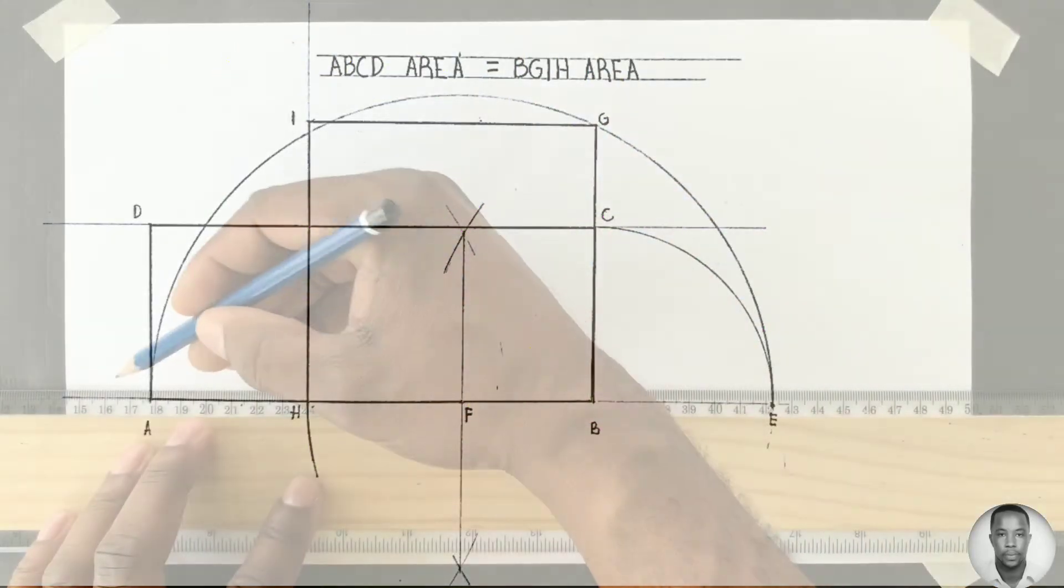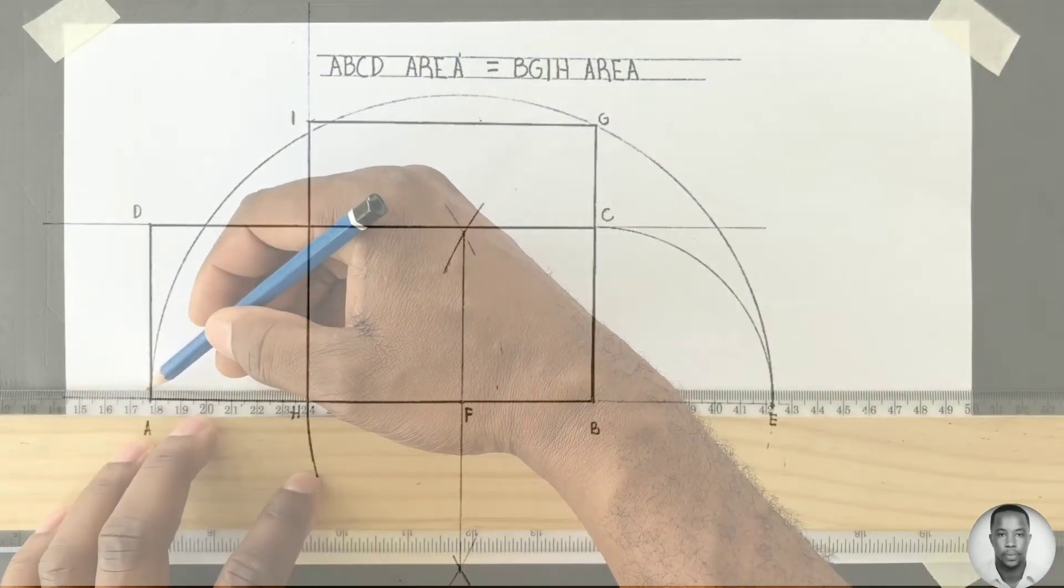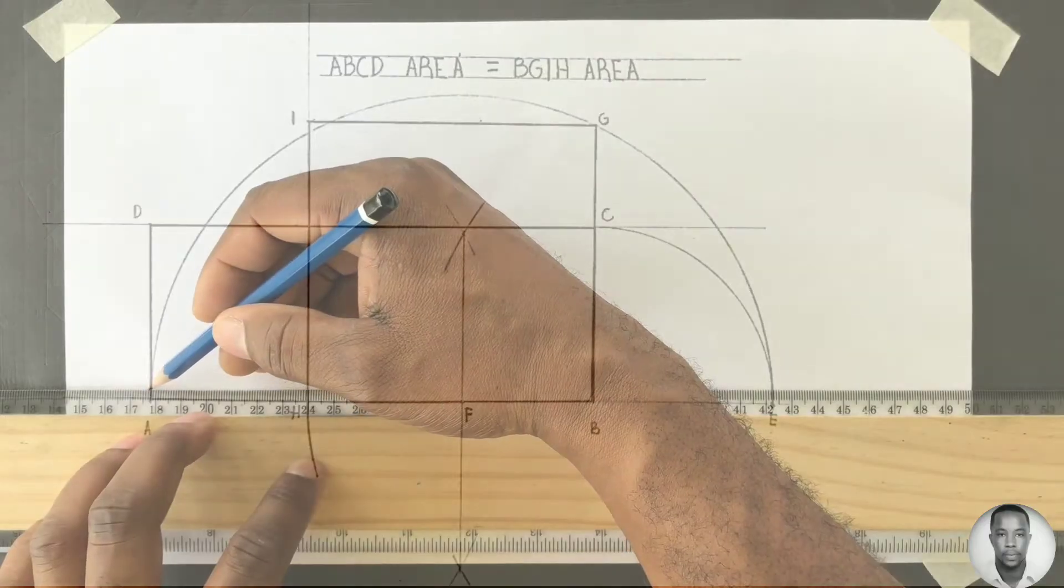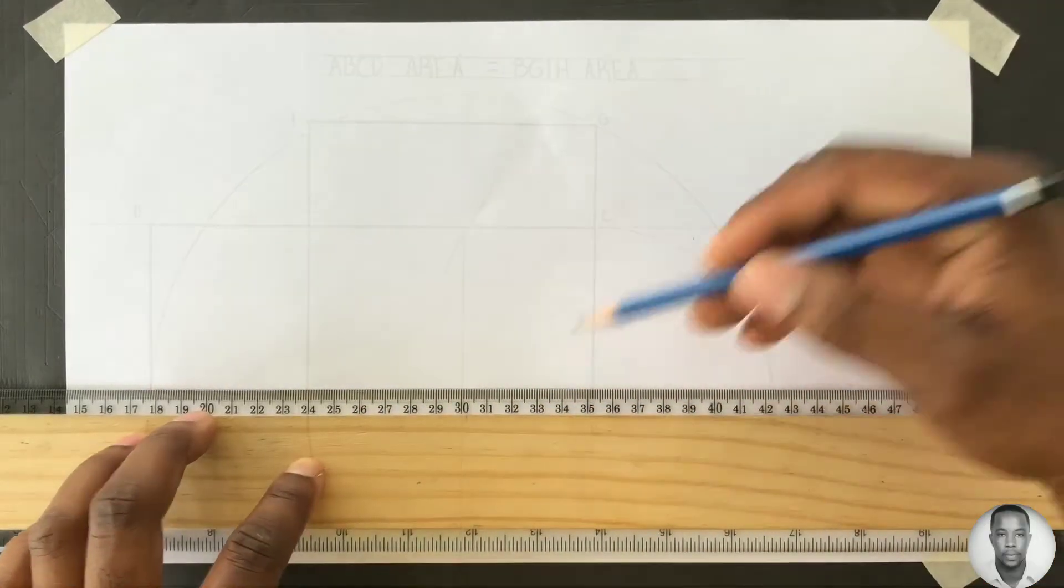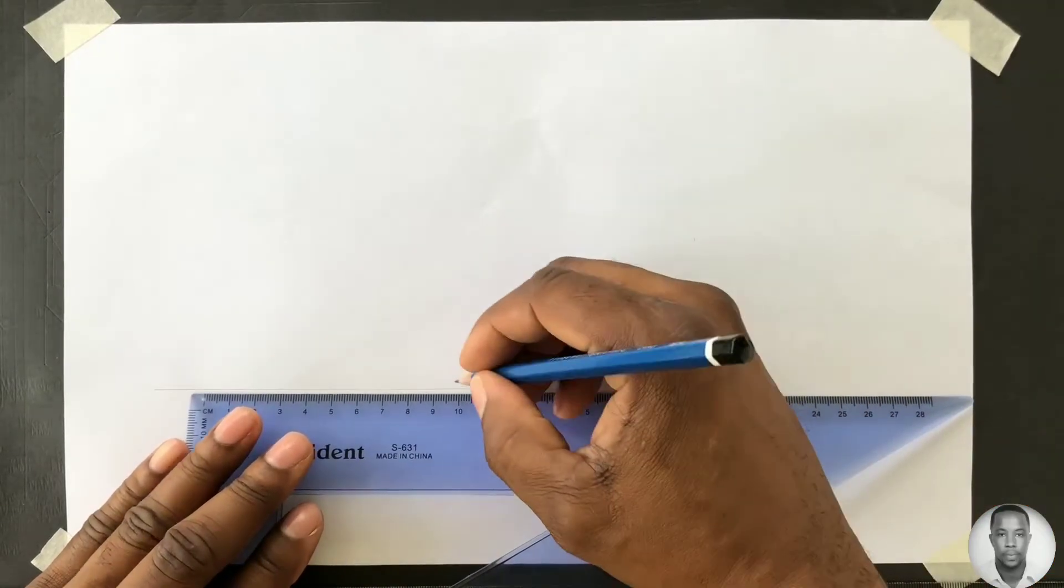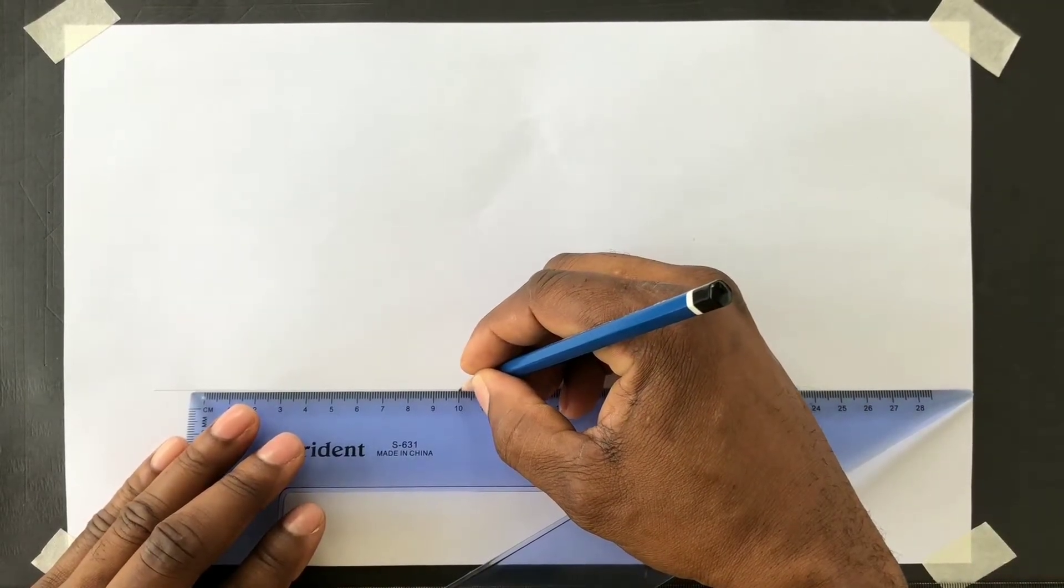Using your T-square, draw a horizontal construction line that is thin and light. Identify 100 millimeters on this line.